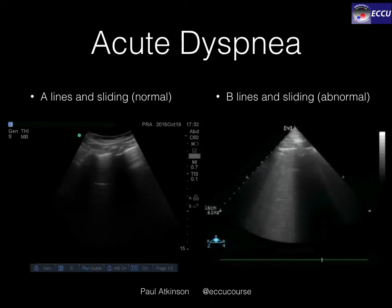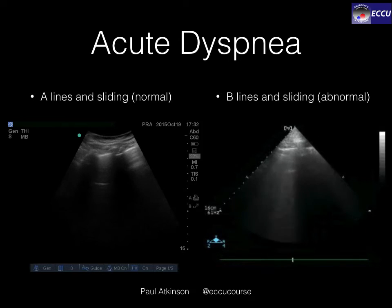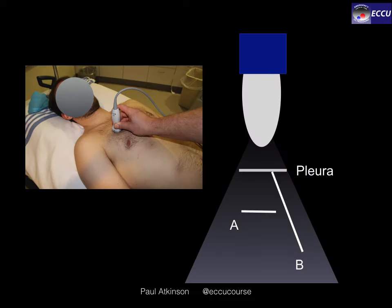Welcome to this quick one-minute overview of lung ultrasound for acute dyspnea and breathlessness in the emergency department. I want to point out some of the common artifacts in this schematic. The ultrasound probe — either a phased array cardiac probe or an abdominal probe — can be placed in a longitudinal fashion on the chest.